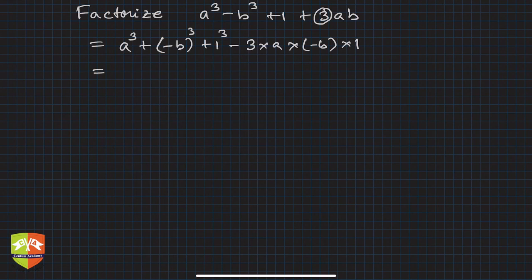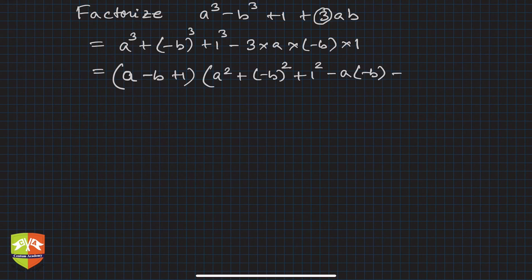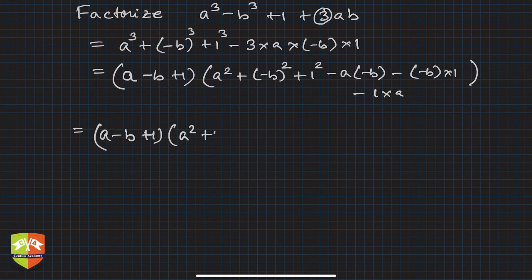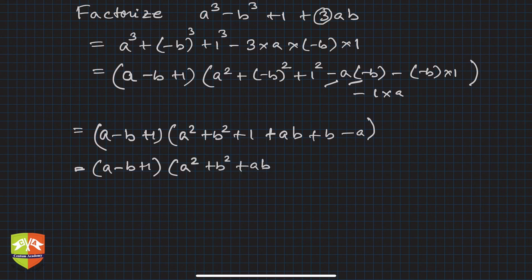So it becomes a minus b plus 1 — the a plus b plus c form — times a square plus minus b square plus 1 square, then minus a times minus b, minus minus b times 1, and minus 1 times a. This simplifies to a minus b plus 1 times a square plus b square plus 1 plus ab plus b minus a. Rearranging, the second factor is a square plus b square plus ab minus a plus b plus 1.